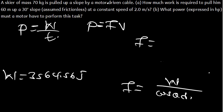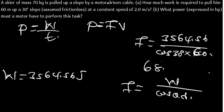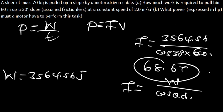So force = 3564.56 ÷ (cos30° × 60) = 3564.56 ÷ 51.96, which gives approximately 68.6 Newtons. So 68.6 N is our force.